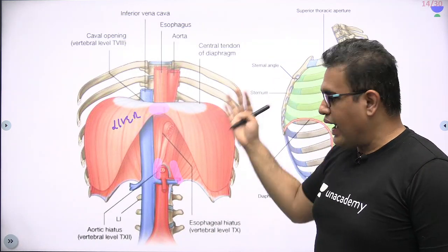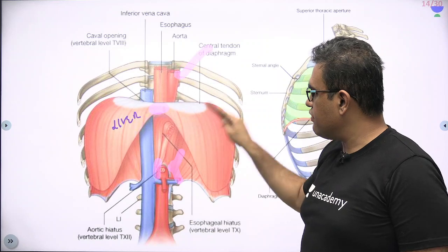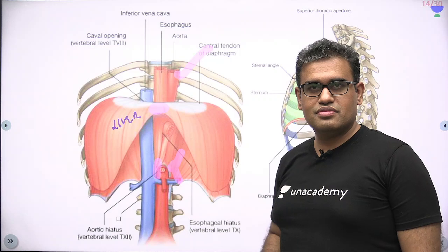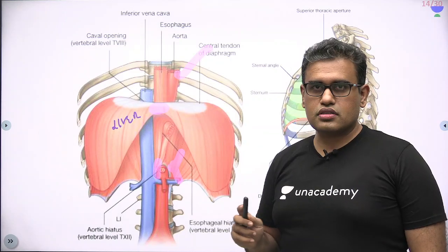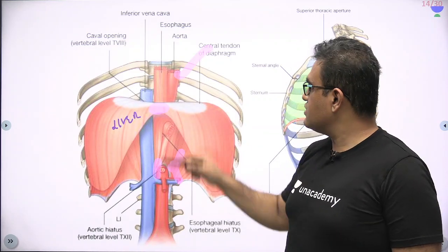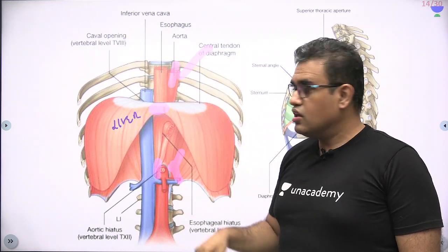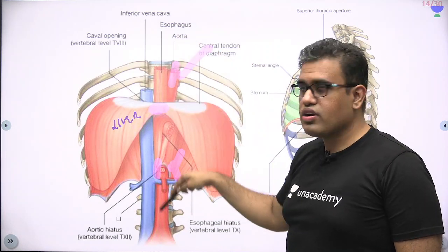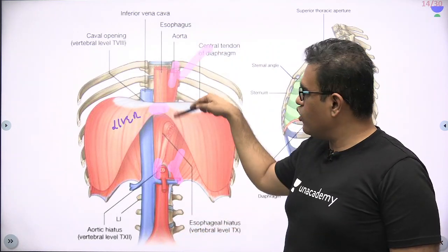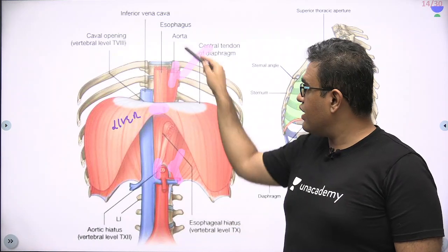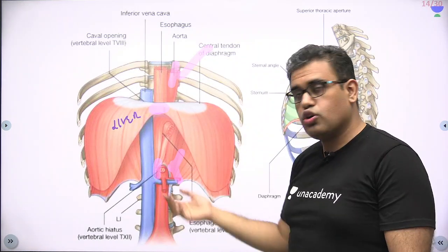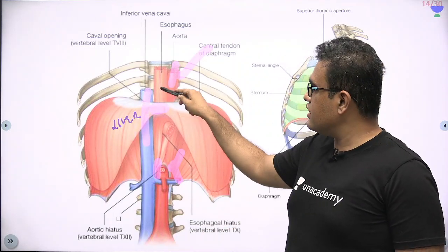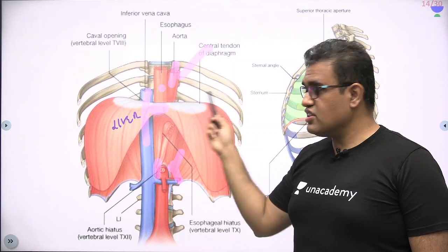Why are we calling it thoracoabdominal? Obviously it separates the thoracic cavity from the abdominal cavity. Does anything pass through it? Many structures do. There are three major openings. Apply common sense: the aorta has to go down, food has to go down through the esophagus, and the heart needs to receive blood from below via the IVC. So the three major openings are: IVC, esophagus, and aorta. There are also other minor openings we will subsequently see.